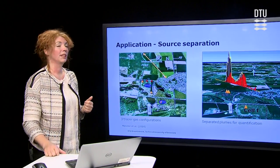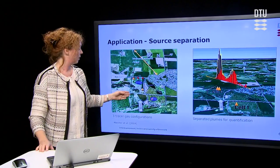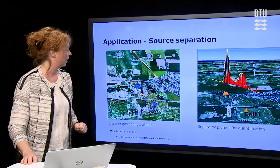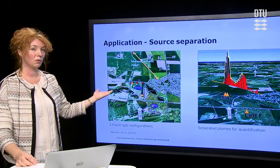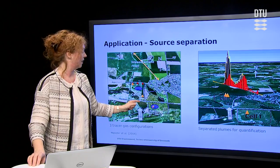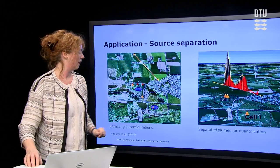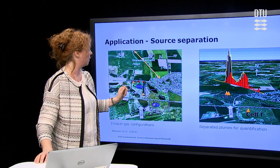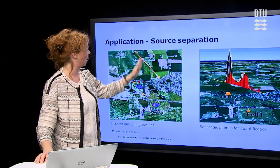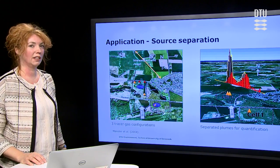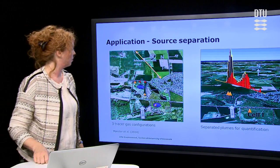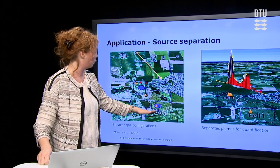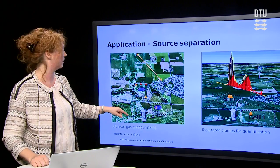Now I'll show you an application of the method. What you see here is a landfill and it actually has another landfill just next to it. When we were asked to quantify the emissions from this site, they forgot to tell us that there was also a landfill just next to it. So we put up our tracer release bottles and then we measured downwind and we saw at least two plumes, which told us there was also another source. We went back and asked for more information, and they confirmed there was indeed another landfill there.